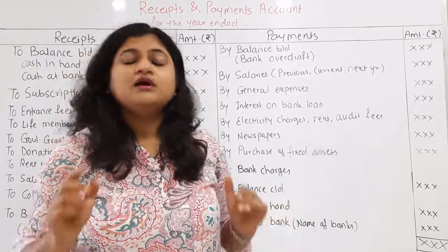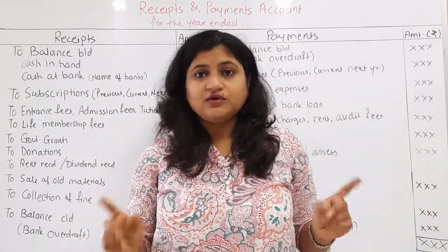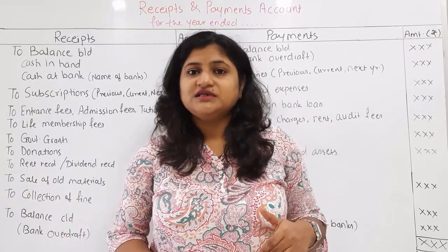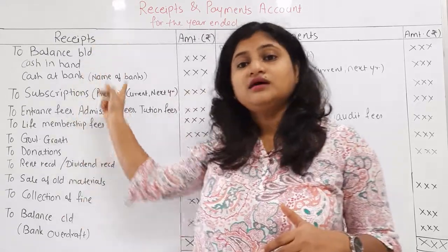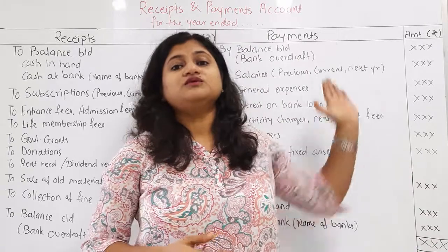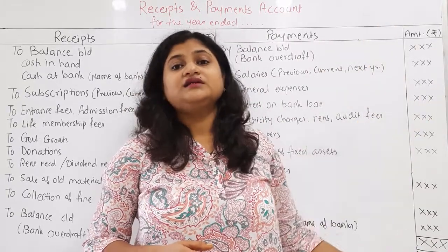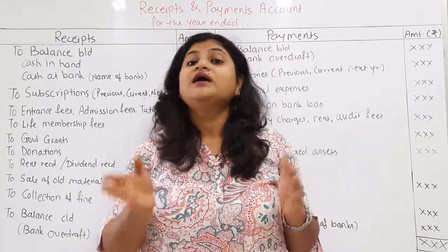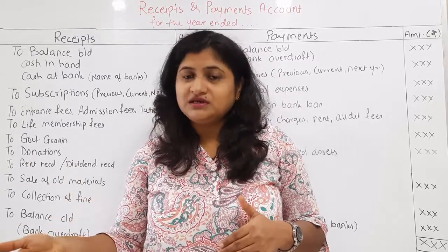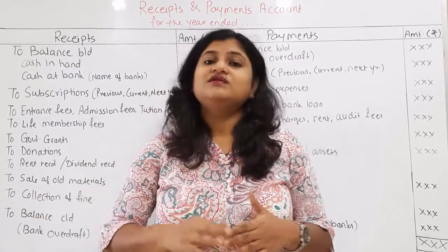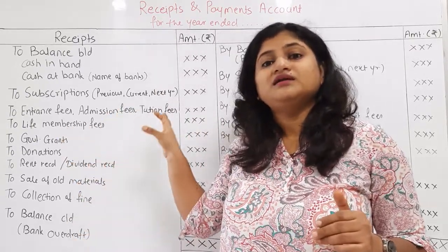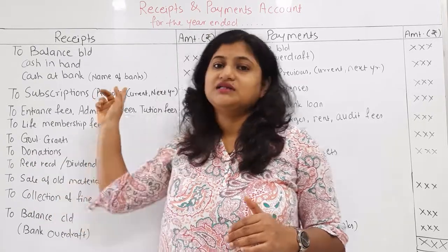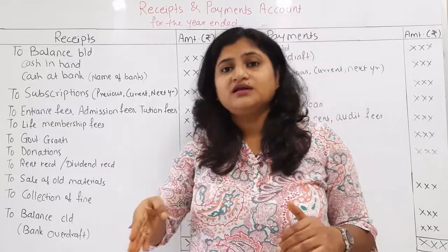Receipt and payment account is a real account. The rule: debit what comes in, credit what goes out. There are two categories: capital receipt and capital expenditure, as well as revenue receipt and revenue expenditure. Both categories of payment and receipt are included. Also, receipt and payment entries include the previous year, current year, and next year.